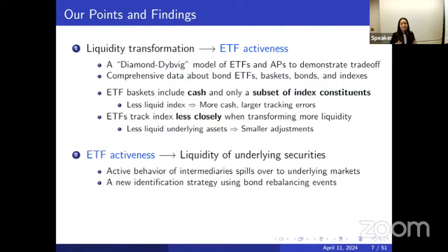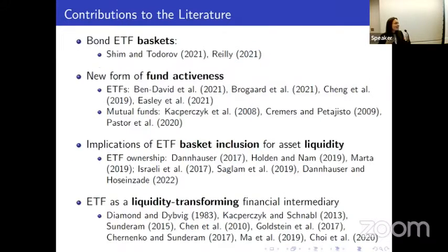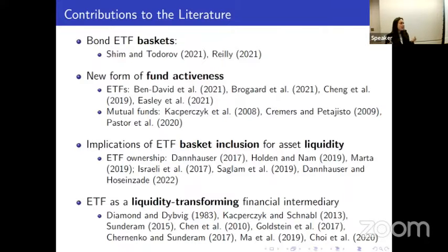Our second key finding is that this active behavior of ETFs spills over into broader financial markets — specifically, it affects the liquidity of the underlying securities. We have a new identification strategy that uses bond rebalancing events. We find that inclusion in ETF baskets generally improves bond liquidity, but this effect can flip during times of market stress when there is imbalance between redemption and creation baskets, such as during the COVID-19 market disruption. We are among the first studies to focus on the key role of ETF baskets rather than holdings more broadly, and we highlight a new form of fund activeness, casting ETFs as liquidity-transforming financial intermediaries, much like banks or open-end mutual funds.